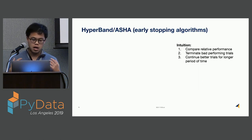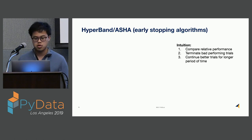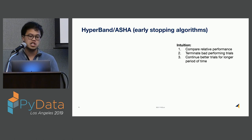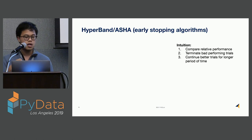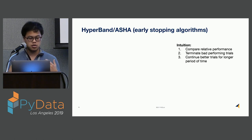It turns out there's a hyperparameter technique for this, called hyperband — an early stopping algorithm that aims to allocate resources to better-performing trials. The high-level intuition is that you compare relative performance for all training runs, terminate the bad performers, and continue the better ones for a longer period of time, in an iterative fashion.